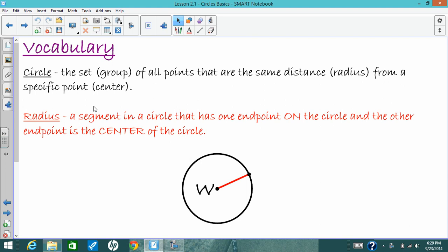So the first thing we need to talk about is what exactly is a circle. A circle is actually made up of a set of points, and all these points are the same distance, which we call a radius. They're the same distance away from one specific point, the center of the circle.